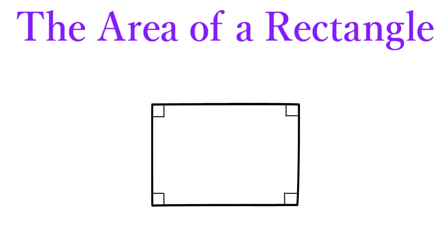Also like a square, the two opposite sides of a rectangle are always of equal lengths. Unlike a square, however, two adjacent sides of a rectangle may be of different lengths.